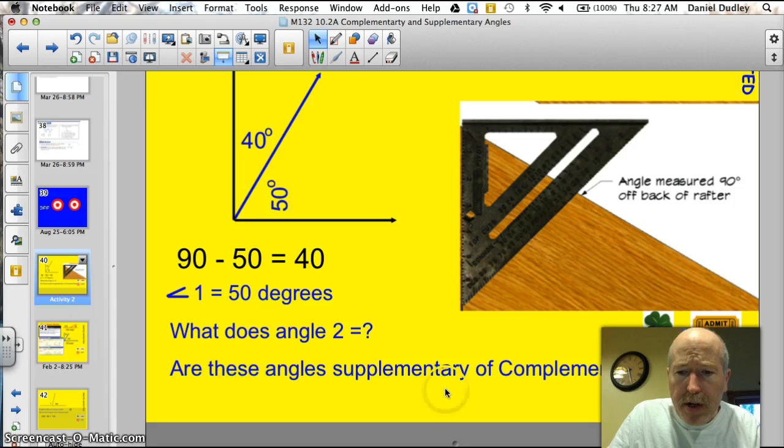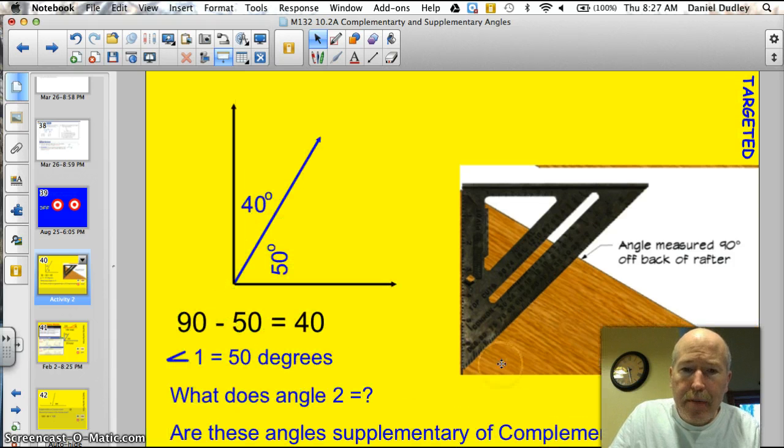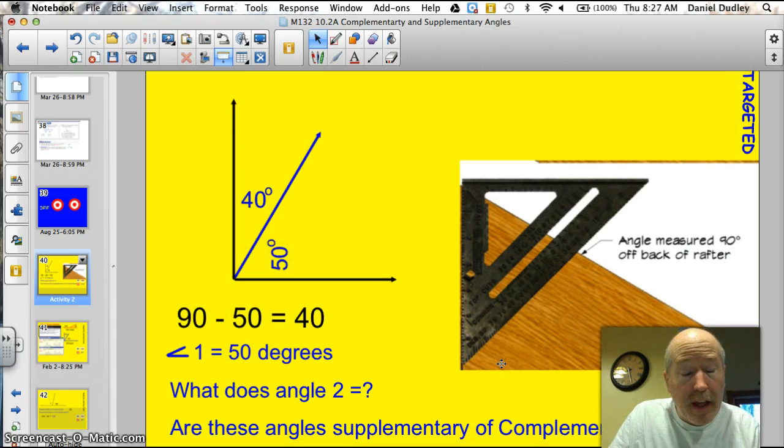Is this angle supplementary or complementary? It is a complementary angle. Tonight, that's what we're going to be learning. Complementary angles add up to be 90 degrees. Supplementary angles add up to be 180 degrees. And then you are just going to have to use a little subtraction to find out what the other angle is. That's the entire lesson. Let's look at it a little more closely.